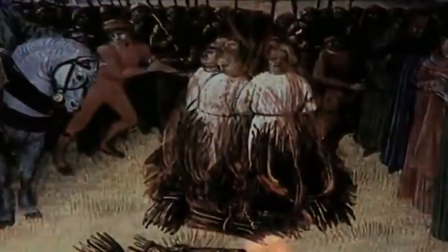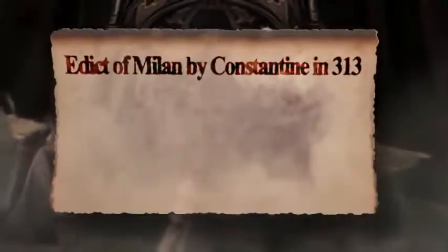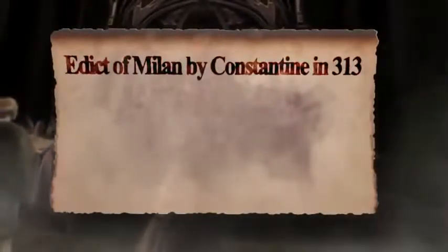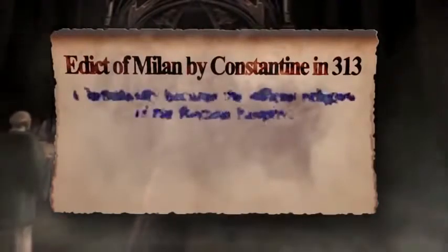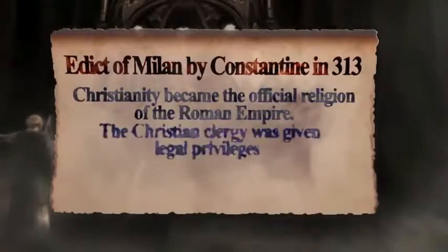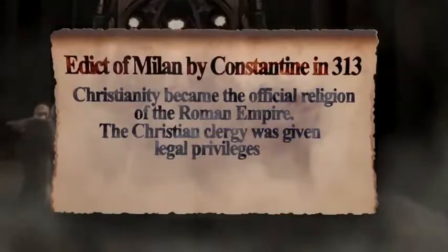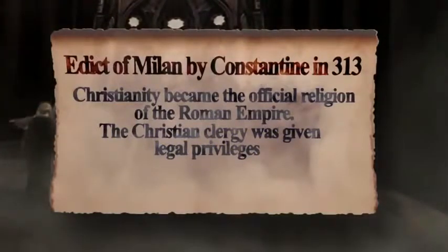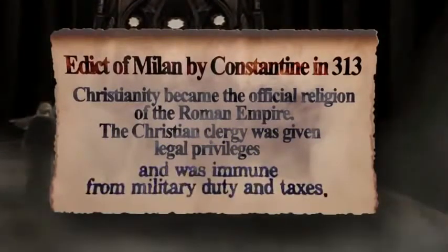The early church was oppressed by many emperors, but there was a turning point during the reign of Emperor Constantine in the 3rd century. In 313, Emperor Constantine proclaimed the Edict of Milan. The Edict approved Christianity as a legal religion of Rome, and gave legal privileges and immunity from military duty and taxes to the Christian clergy.